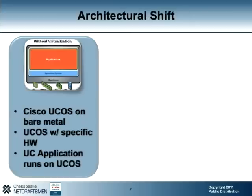Virtualization represents an architectural shift in how we think of UC applications in our data centers. Without virtualization, we run the Cisco UC OS on bare metal servers. These can be Cisco MCS servers or customer-provided servers built to Cisco specifications. The UC applications run on UC OS, and aside from the business edition of Unified Communications Manager, only one application can run on one physical server.